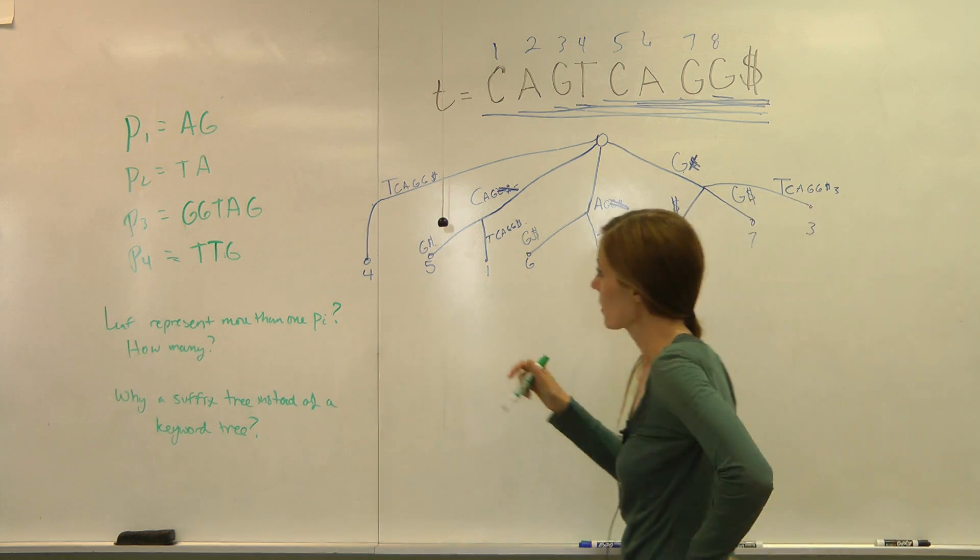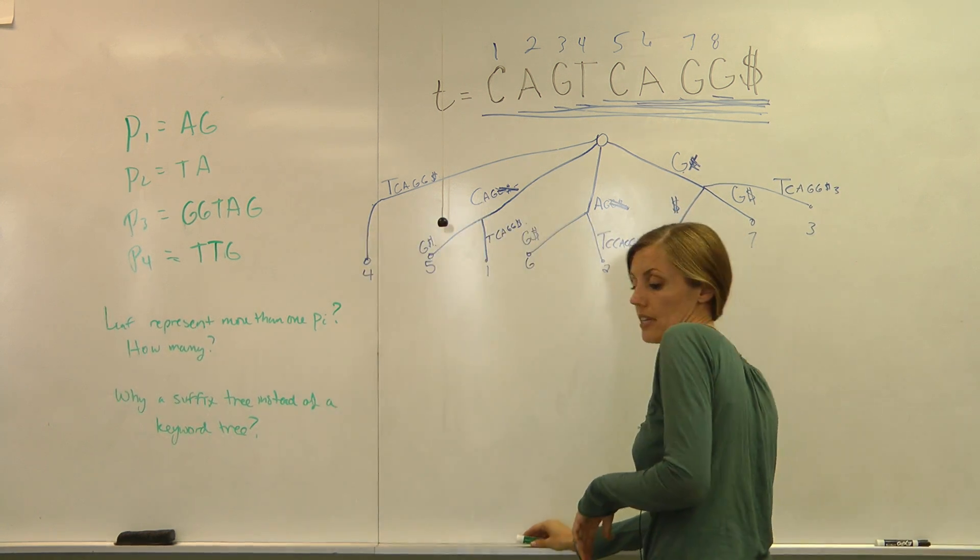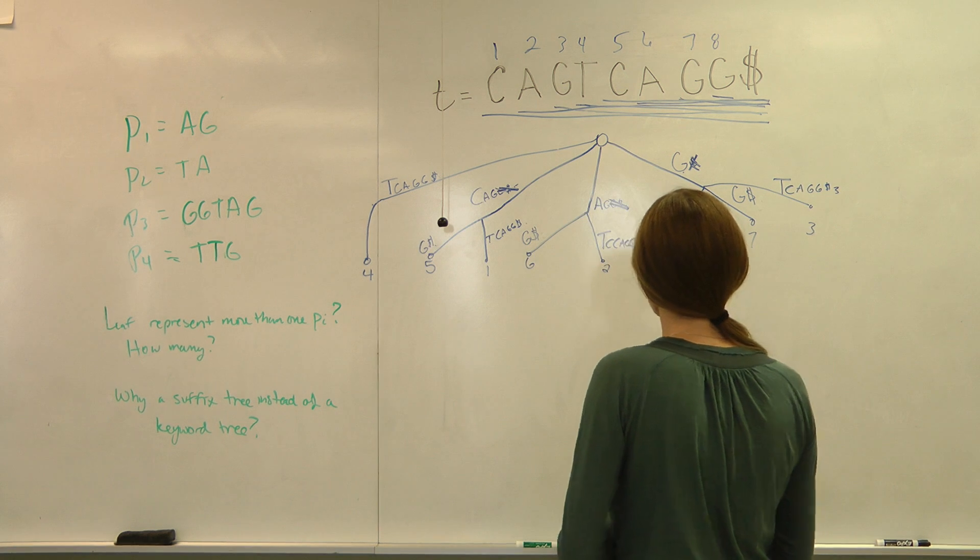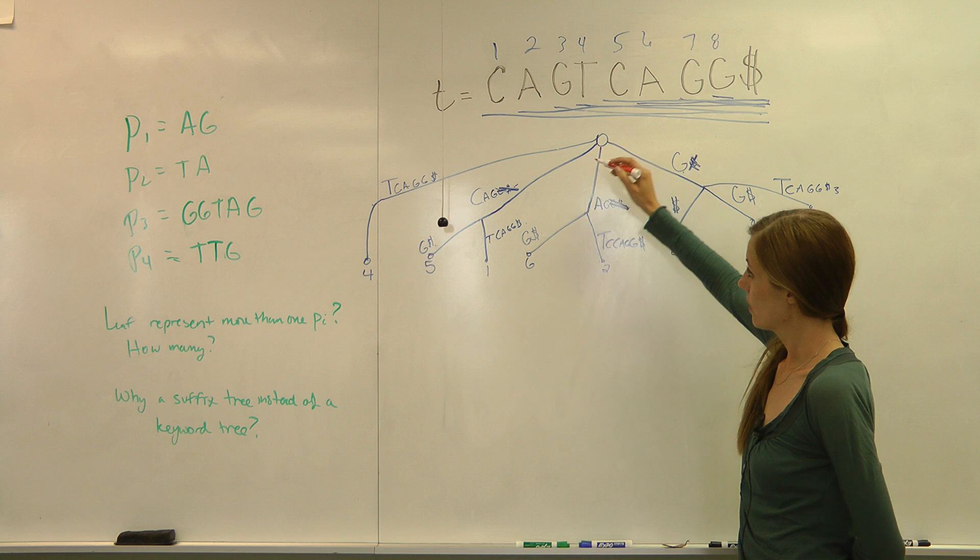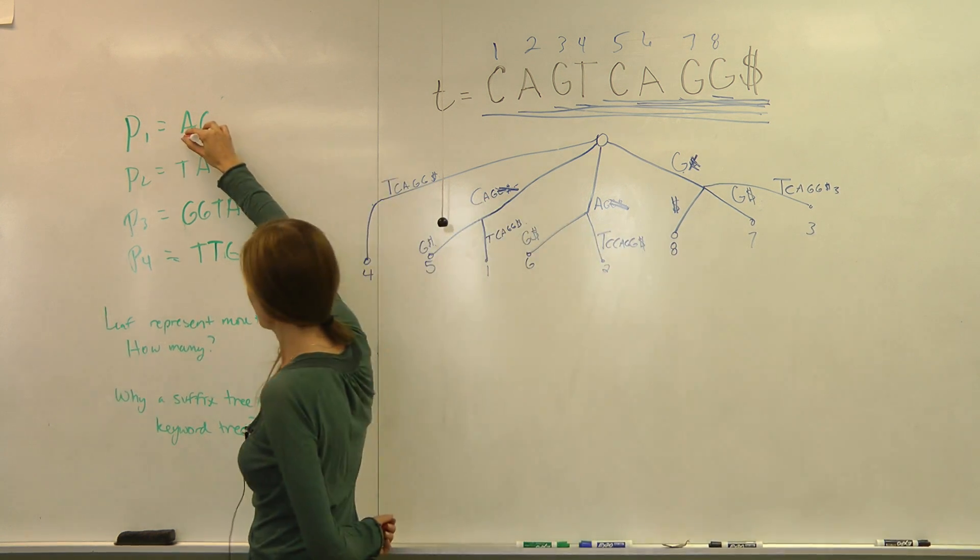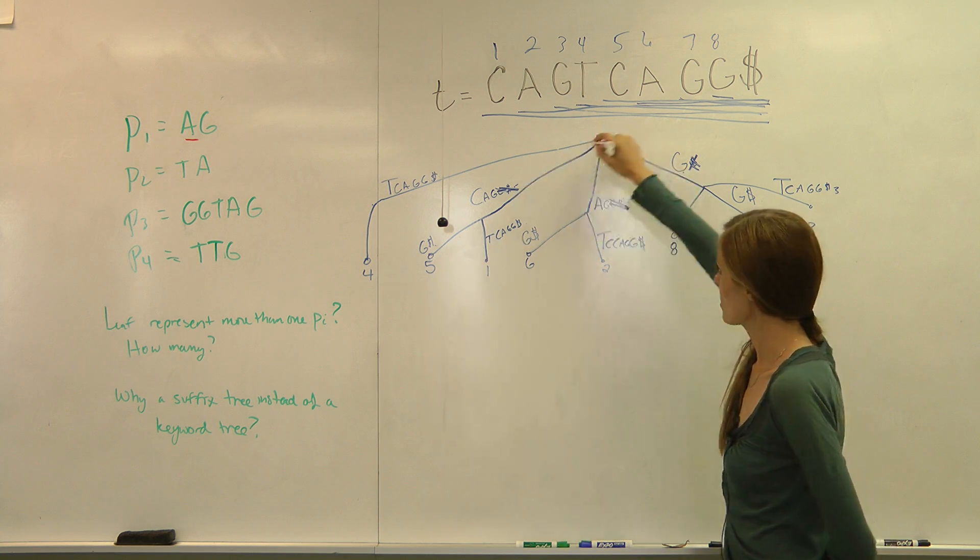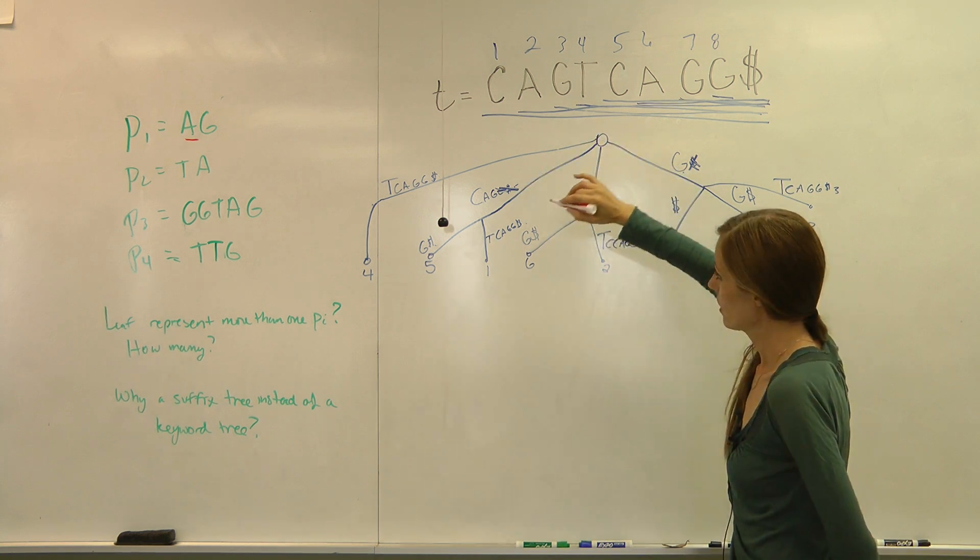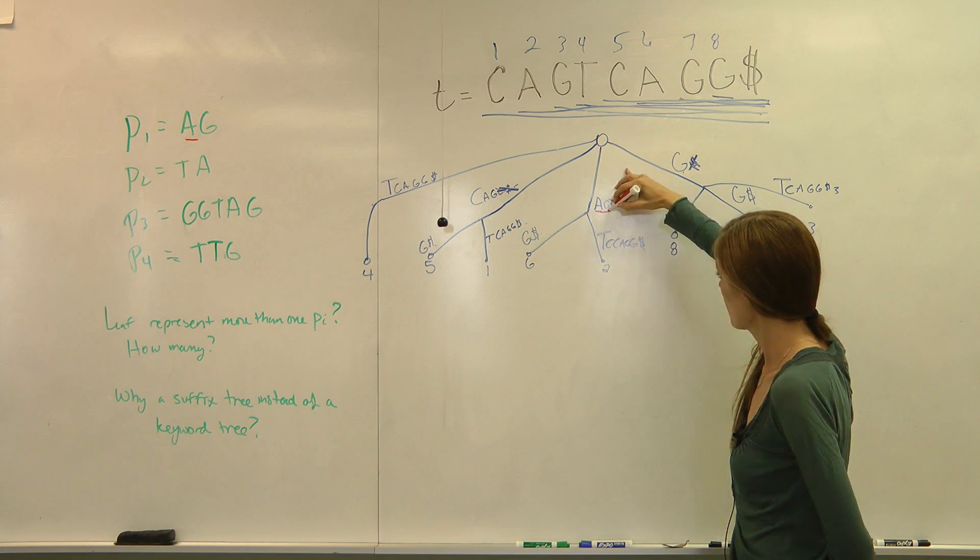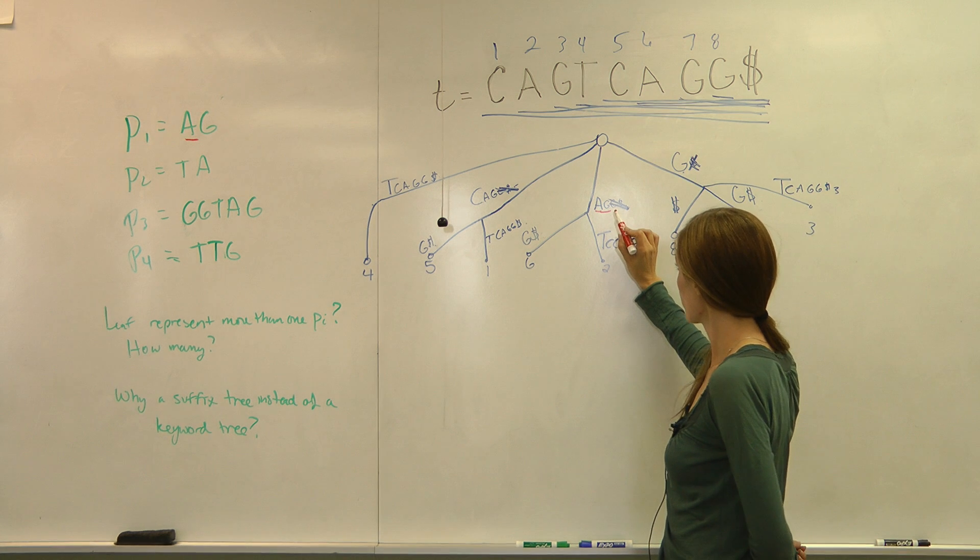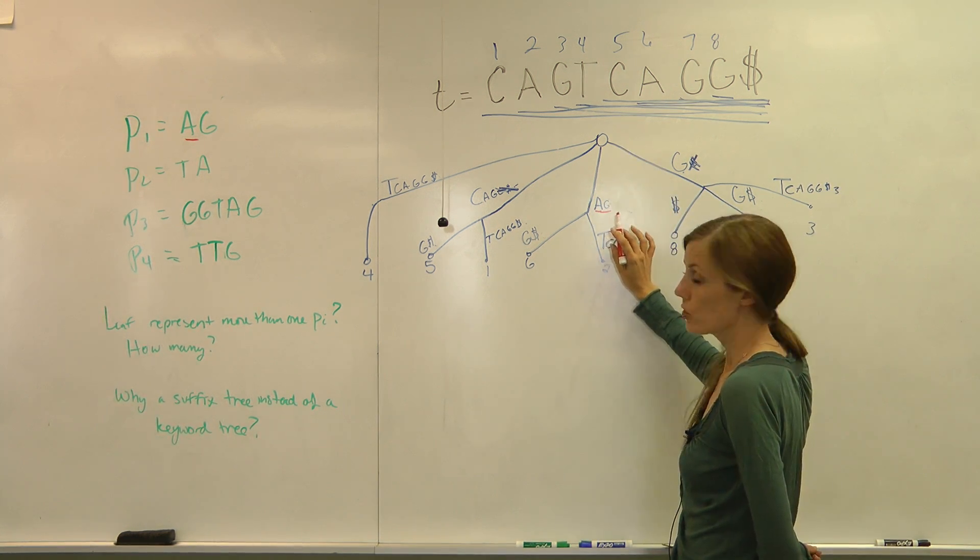So our first pattern that we want to know if exists in this text is AG. We look on our tree. Since the first letter is A, then we would check for the branch that starts with A. And the next letter is G. And as soon as you find your pattern, you stop.